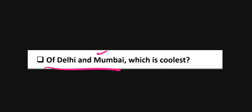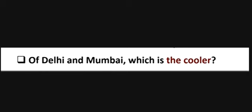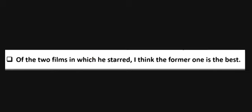Now, for example — Delhi and Bombay — which is the cooler? Because we are choosing one from two, we use comparative degree: 'Which is the cooler?' So 'of Delhi and Bombay, which is the cooler?' We use comparative degree when selecting one from two.